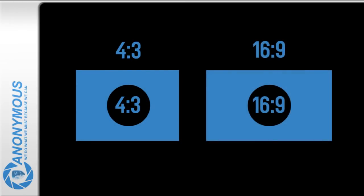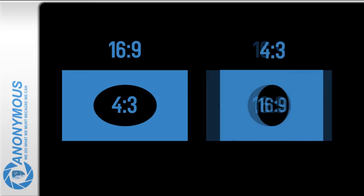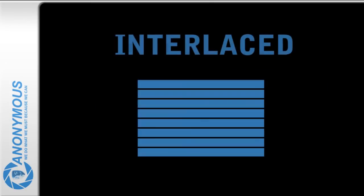If formatting a 4:3 video into a 16:9 format, the objects on screen grow wider. The other way around, things grow slimmer. Another encoding problem you might come across is when the material is interlaced.